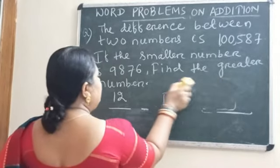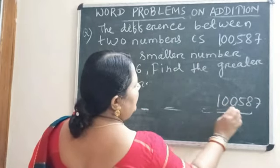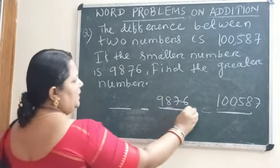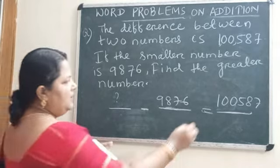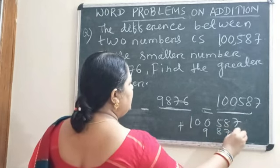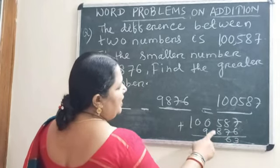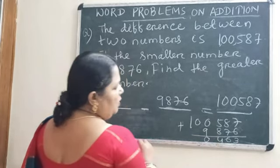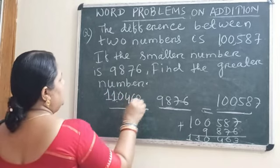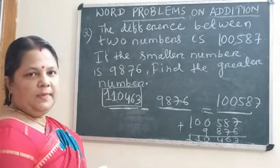Now perform the addition: 1,587 plus 9,876. Starting from the ones place — 7 plus 6 equals 13, write 3 carry 1. 8 plus 7 plus 1 equals 16, write 6 carry 1. 5 plus 8 plus 1 equals 14, write 4 carry 1. 1 plus 9 plus 1 equals 11, write 1 carry 1. So we get 11,463. This is the greater number. If we subtract 9,876 from 11,463, the answer will be 1,587 — which confirms the difference.